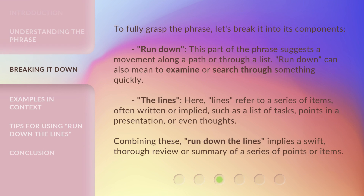To fully grasp the phrase, let's break it into its components. 'Run Down' — this part of the phrase suggests a movement along a path or through a list, and can also mean to examine or search through something quickly. 'The Lines' refers to a series of items, often written or implied, such as a list of tasks, points in a presentation, or even thoughts. Combining these, 'Run Down the Lines' implies a swift, thorough review or summary of a series of points or items.